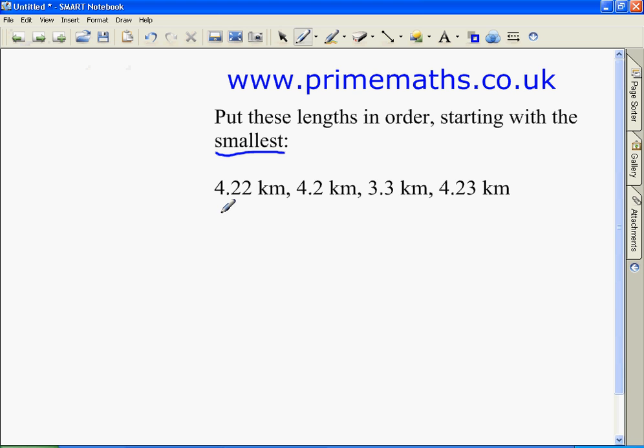Put these lengths in order starting with the smallest: 4.22 kilometers, 4.2 kilometers, 3.3 kilometers and 4.23 kilometers. The first step is to align the dots.